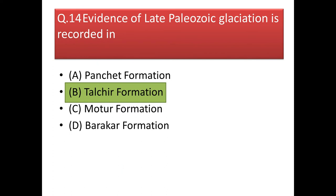Next question: evidence of Late Paleozoic glaciation is recorded in? This was recorded in the Talchir Formation, which is a succession of the Gondwana Supergroup, ranging from Upper Carboniferous to Lower Cretaceous. The Talchir Formation is the oldest formation of the Gondwana Supergroup, and in this group evidence of Late Paleozoic glaciation is found.